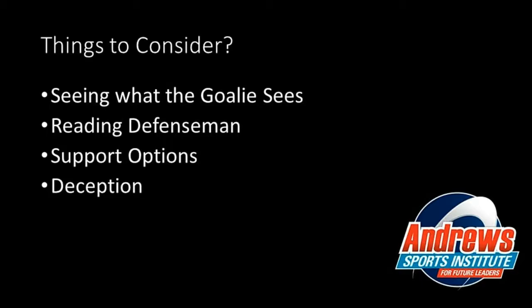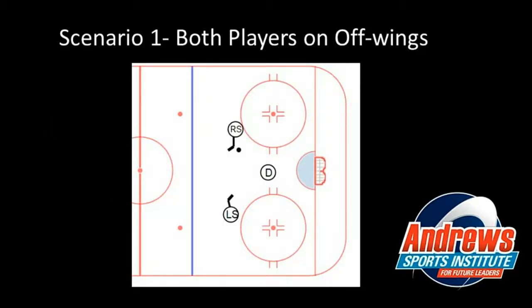Next, we're going to look at reading defensemen — if they overplay, where their stick is, how to read that, and then how to manipulate it, which is the fourth point: deception. How do we make the defenseman move his stick? The third concept is support options: do we stay high, open up for a one-timer, or drive the back post? The theme throughout is which way the players shoot — something not many consider. We often think it's just 'get the puck across the defenseman or shoot for a rebound,' but let's look at four different scenarios.